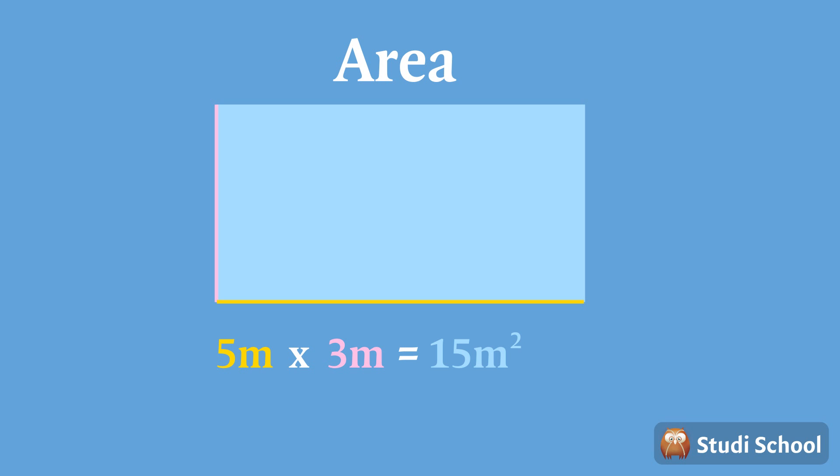The next derived SI unit we will look at is for volume. Volume is the measurement of how much space an object occupies. The volume of a regular cube can be calculated with the following formula: length multiplied by width multiplied by height.